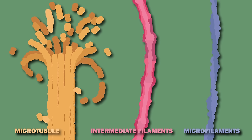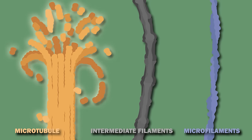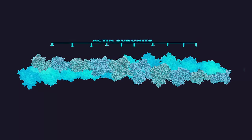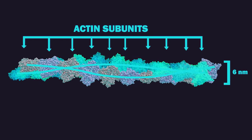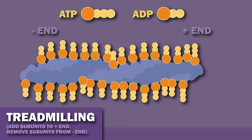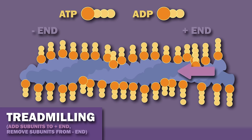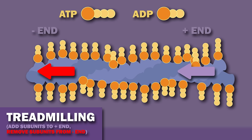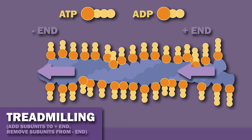Let's discuss each type of cytoskeleton filament in more detail. In this video, we will mostly focus on microfilaments and microtubules. Microfilaments, composed of the globular protein actin, are a double helix 6 nm in diameter. They are organized into linear bundles, 2D networks, and 3D networks, loosely orthogonally cross-linked with properties of semi-solid gels. Actin molecules are tightly bound to an ATP molecule. When they are added to a growing polymer, the ATP is soon hydrolyzed to ADP, which makes it more likely to dissociate from the end of the filament. If actin molecules are added quickly enough, the actin filament can acquire what's called an ATP cap.